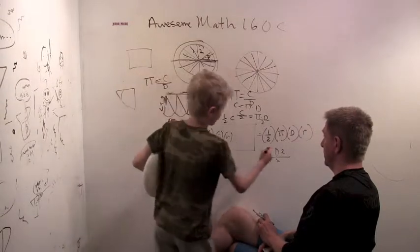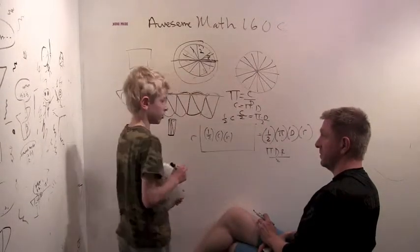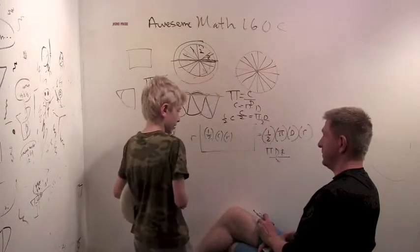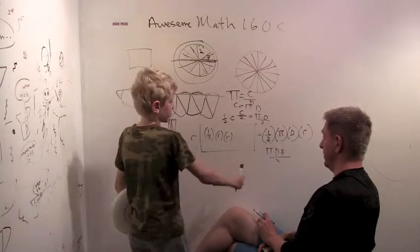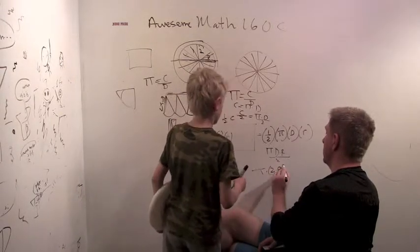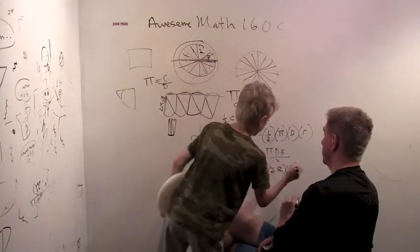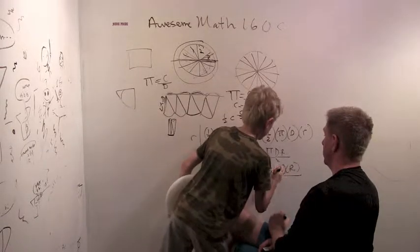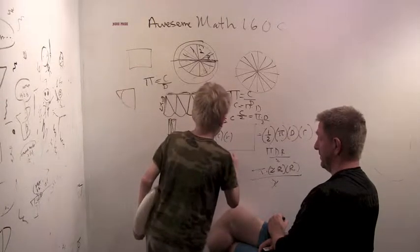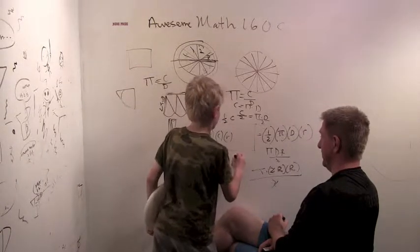And then the diameter is two r. So it's two radius. So you can replace the diameter with two r. Yeah. So pi times two r times r. It's all over two and we can take this two out. So we get pi times r times r. So it's just pi times radius squared.